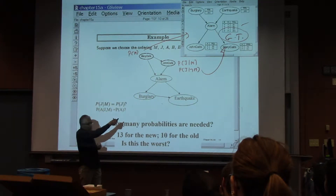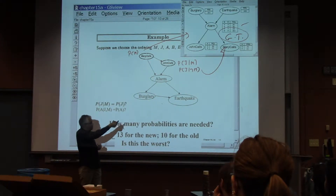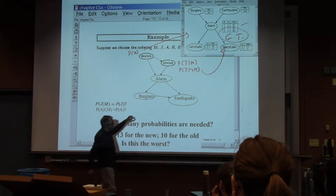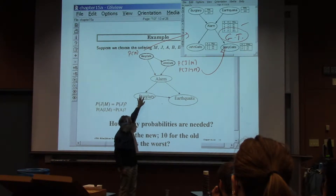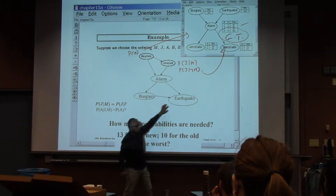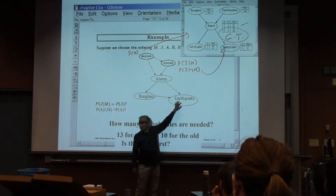3, and then this will be 4. 4 plus 3 is 7, and this will be 2. 7 plus 2 is 9, plus 4 more here. 9 plus 4 is 13.